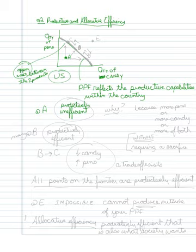At letter A, this is a productively inefficient point. Why? So a point inside the frontier is productively inefficient. It's productively inefficient because I could get more pens, more candy, or more of both.